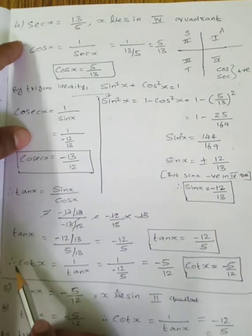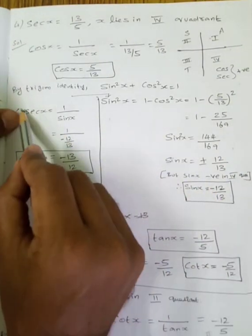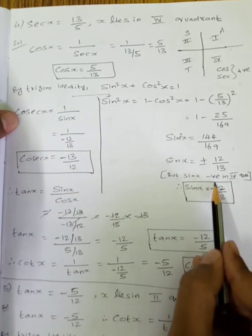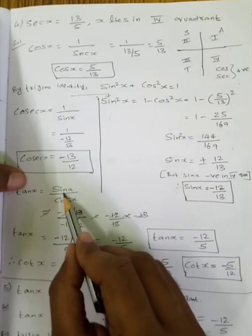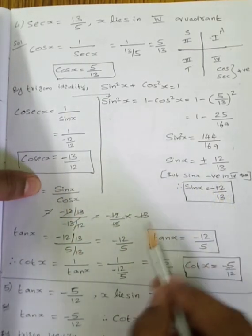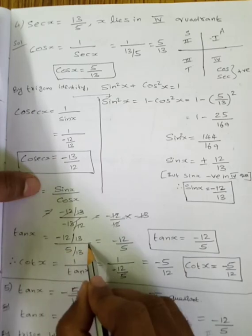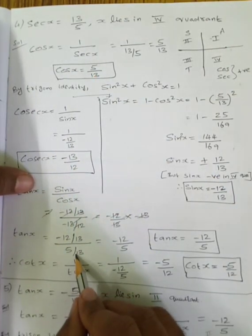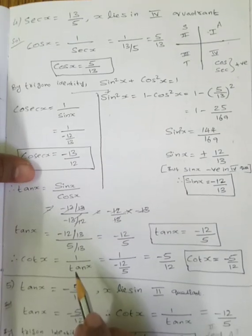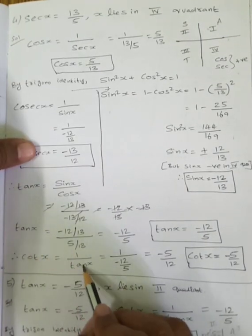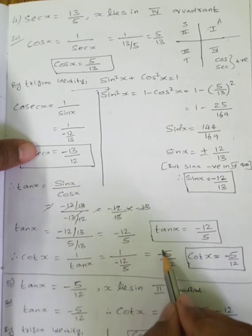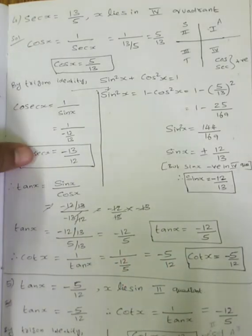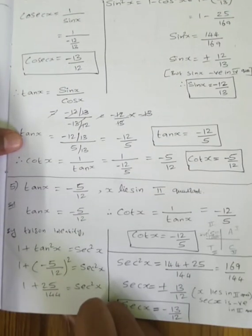So sin x equals minus 12 by 13. Cosecant x equals 1 by sin x, which is 1 by (minus 12 by 13), so cosecant x equals minus 13 by 12. Tan x equals sin by cos: sin value minus 12 by 13, divided by cos value 5 by 13. The 13's cancel, so tan x equals minus 12 by 5. Cot x equals 1 by tan x, so 1 by (minus 12 by 5) equals minus 5 by 12.